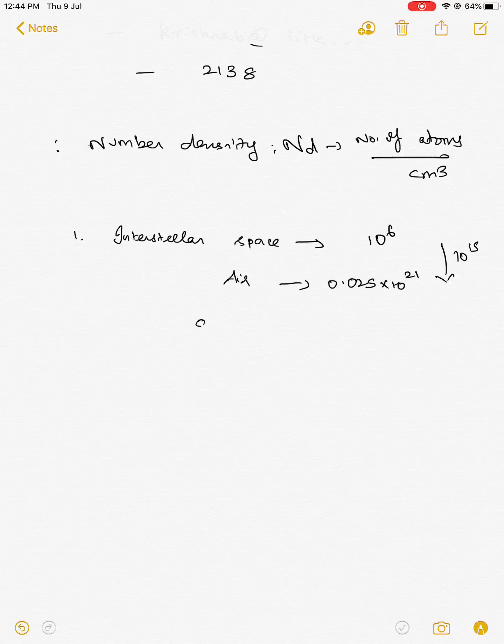And the most common solid that we know, the solid that we all like, let us say diamond, has a density of 176.2 into 10 to the power 21. So basically it is about 5 orders more denser than the air.